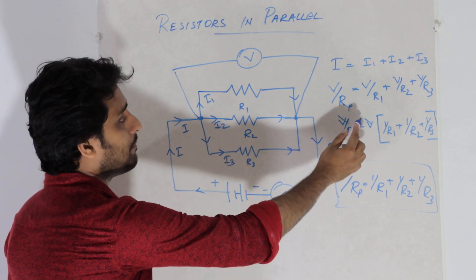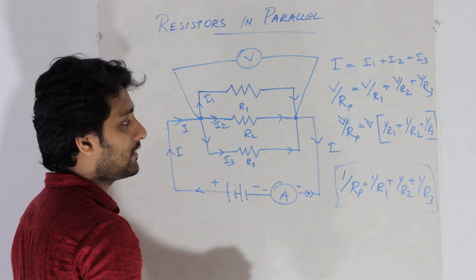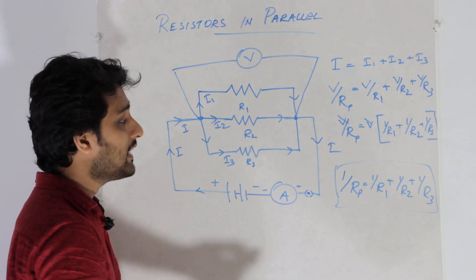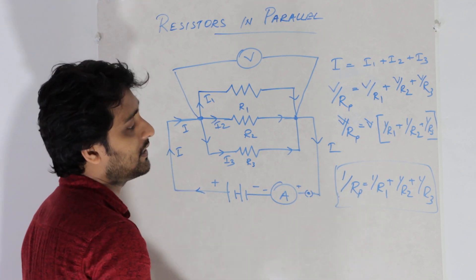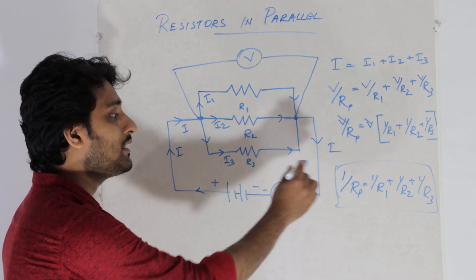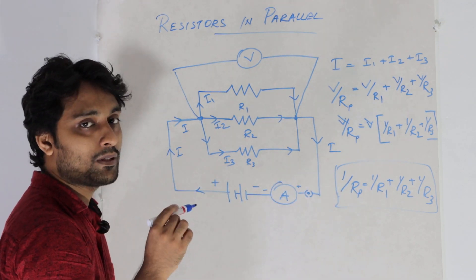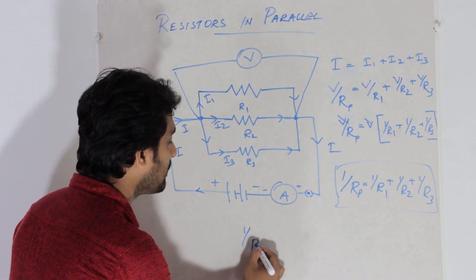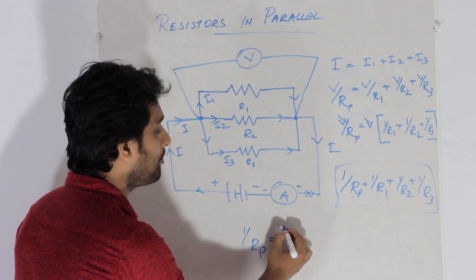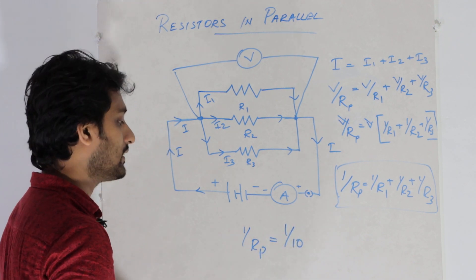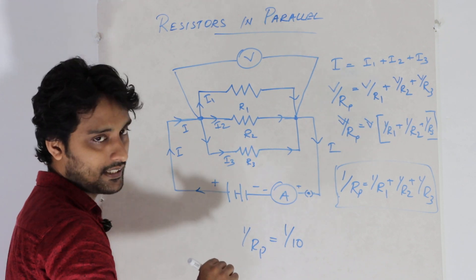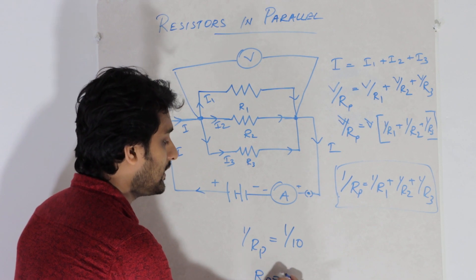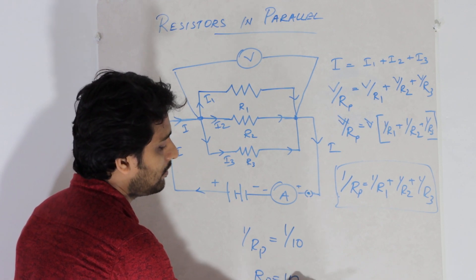So this is the common factor. The equation becomes 1 by Rp equals 1 by R1 plus 1 by R2 plus 1 by R3. That is the reciprocal formula, and 1 by Rp is the answer. Now the answer is 1 by Rp. For example, if Rp gives 1 by 10, then Rp equals 10 ohm.